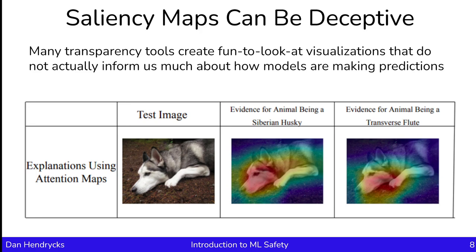The upshot is that many transparency tools do create fun-to-look-at visualizations. They're very shareable online, and people who create these tools are often invited to give many talks showing their interesting-looking visualizations and claiming that they help explain what's going on with neural networks. However, they often don't actually inform us much about how models are making their predictions. For example, here's an explanation using attention maps — we might think we now have an explanation for why the model thinks it's a Siberian husky, that it's using information from that region in the image. However, that's a fairly similar explanation for why the model is assigning some probability to it being a flute. It's easy to read into these explanations and impute meaning that isn't there.